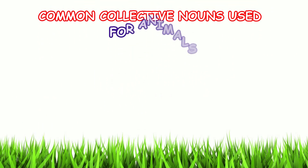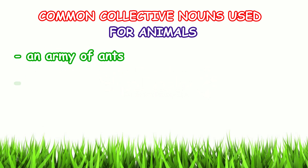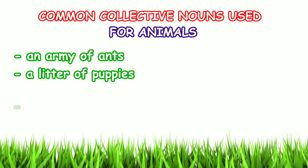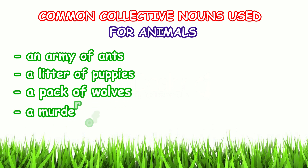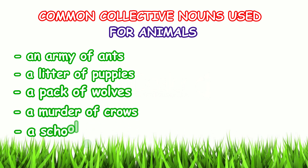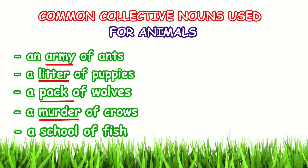Common collective nouns used for animals: an army of ants, a litter of puppies, a pack of wolves, a murder of crows, a school of fish. The underlined words — army, litter, pack, murder, and school — are the collective nouns.